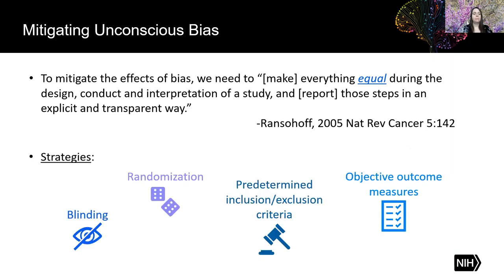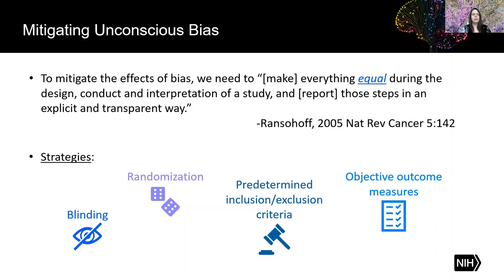Some of the strategies we have for this include blinding — making sure we don't know which group is which during treatment or analysis. There's randomization — randomly assigning a group to treatment so that each sample, person, or animal has the same chance of receiving one treatment versus another. We have predetermined inclusion and exclusion criteria — choosing when data should be removed from the data set, for example outliers, before the experiment ever starts. Finally, we have objective outcome measures, using things like automation or very clear-cut measurements, which avoids ambiguity and judgment calls by the researcher.